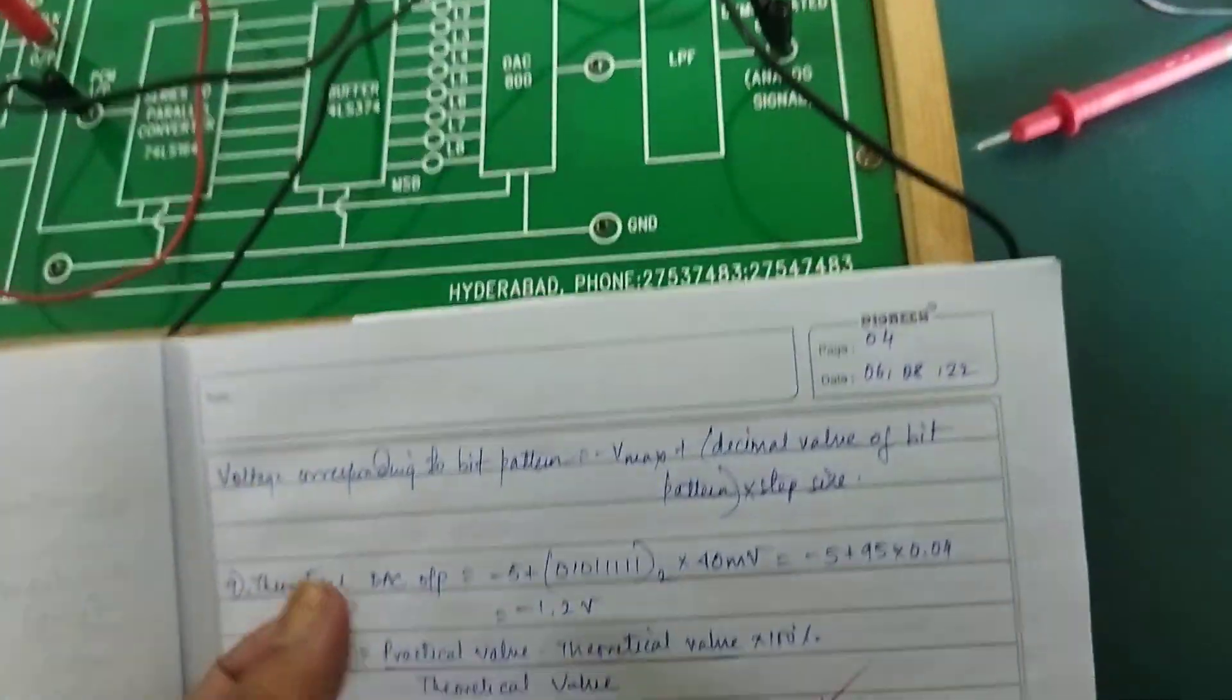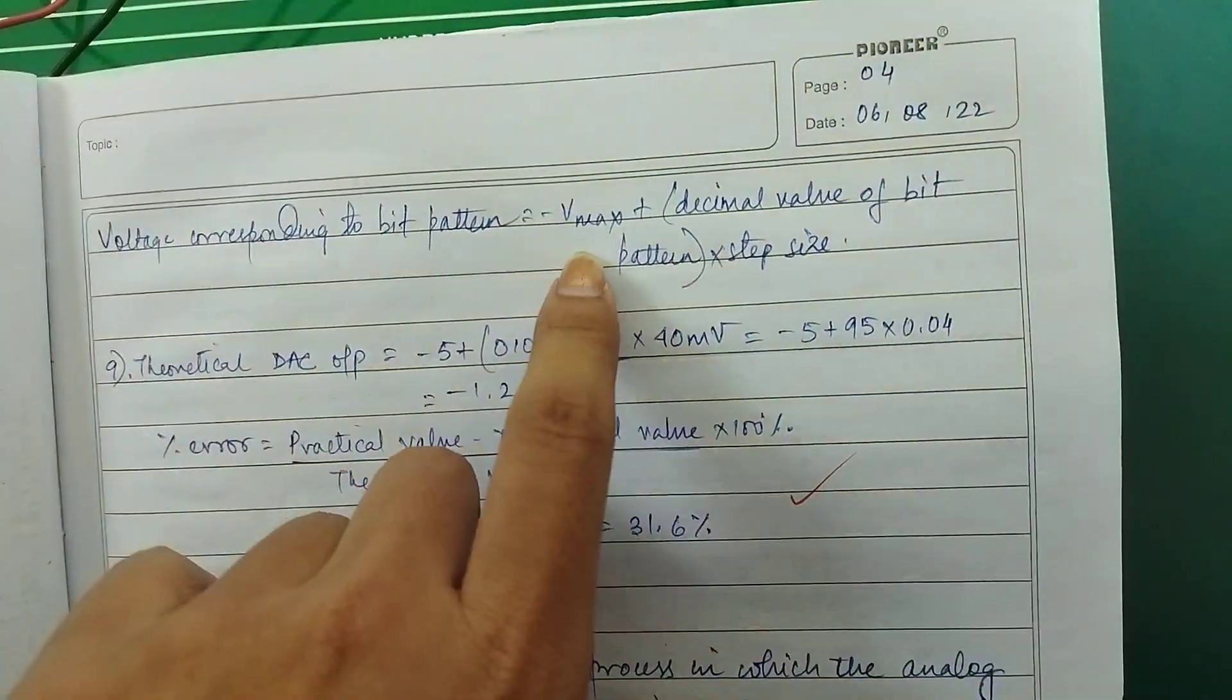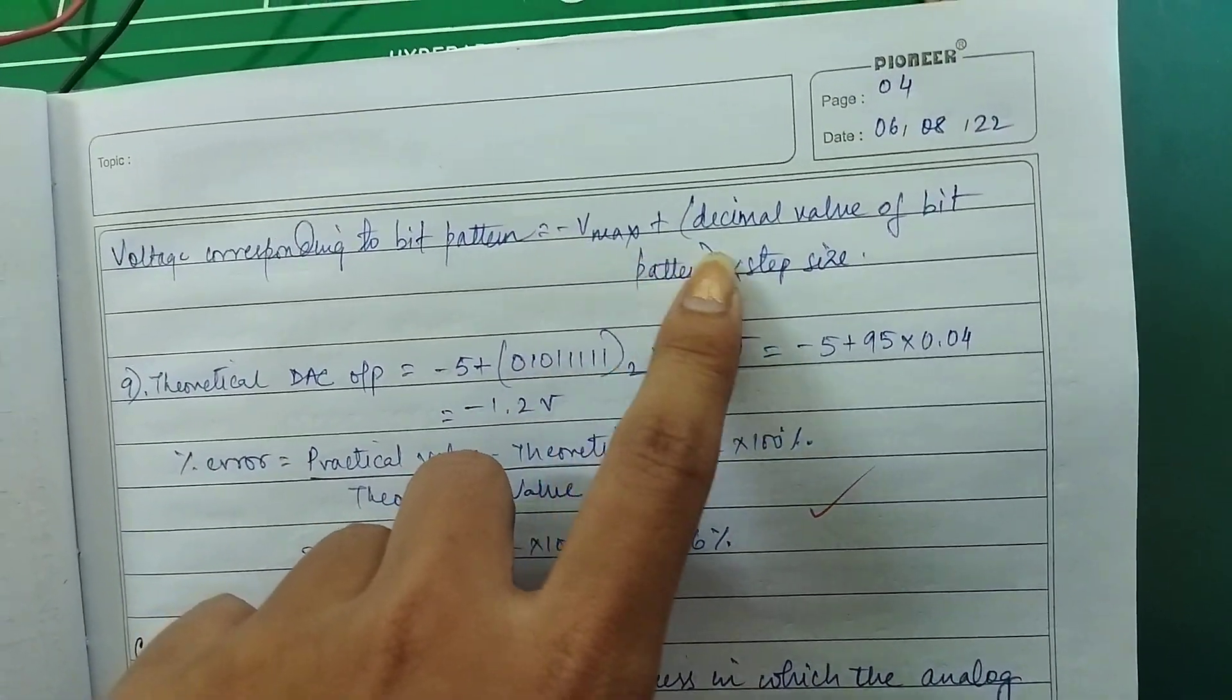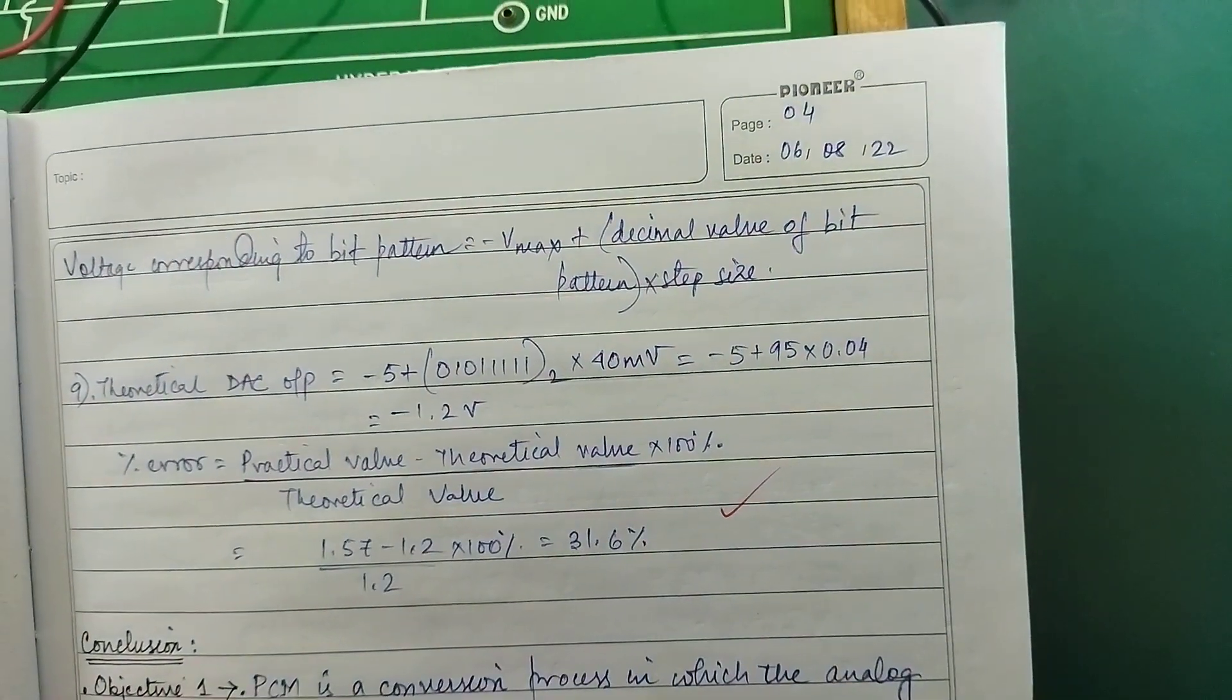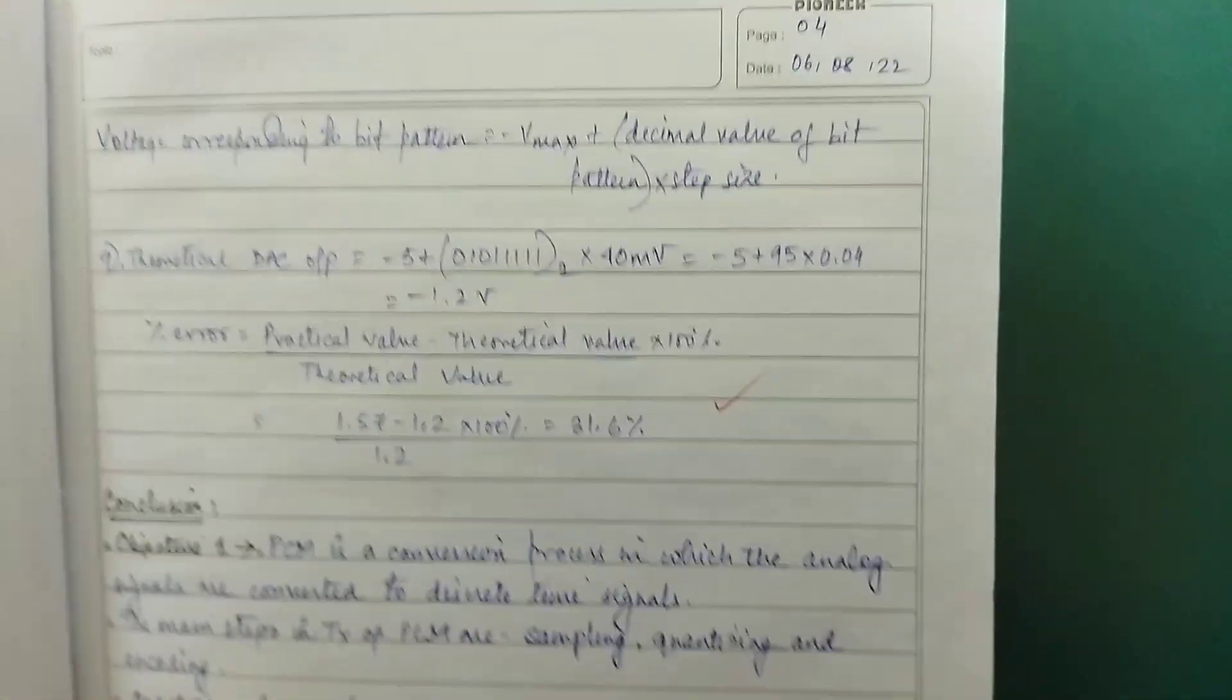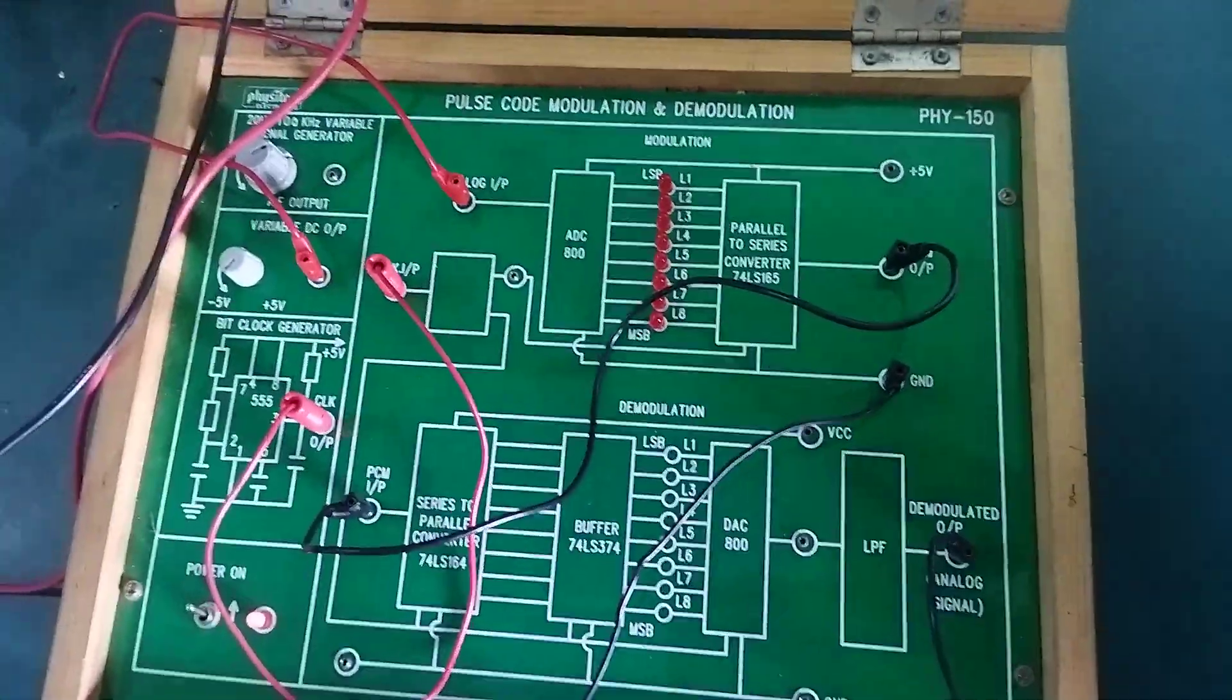If we calculate the DAC output, we calculate the DC value. Then the voltage corresponding to the bit pattern is minus Vmax plus decimal value of bit pattern times step size. This is the formula. The output is very similar and that is our mode.